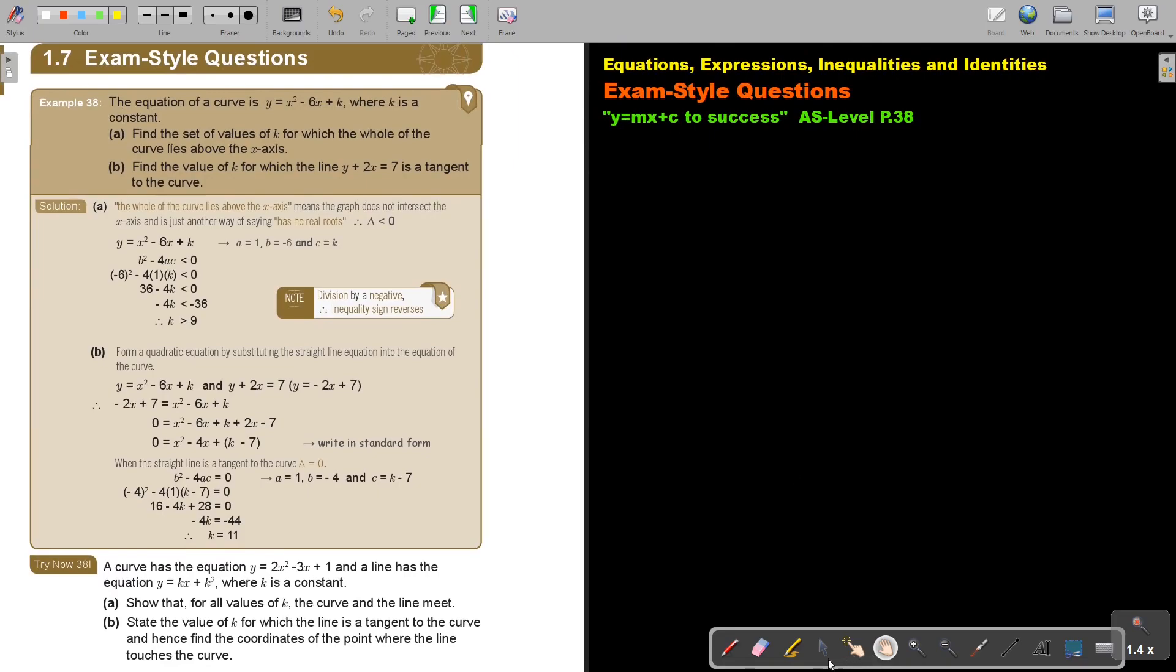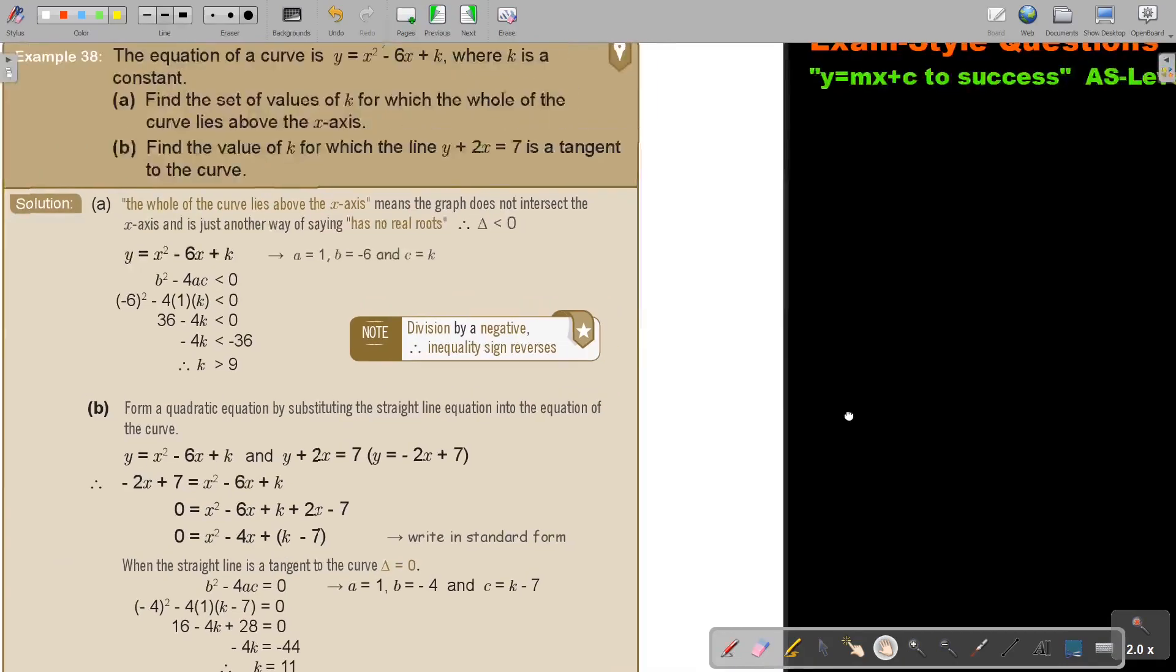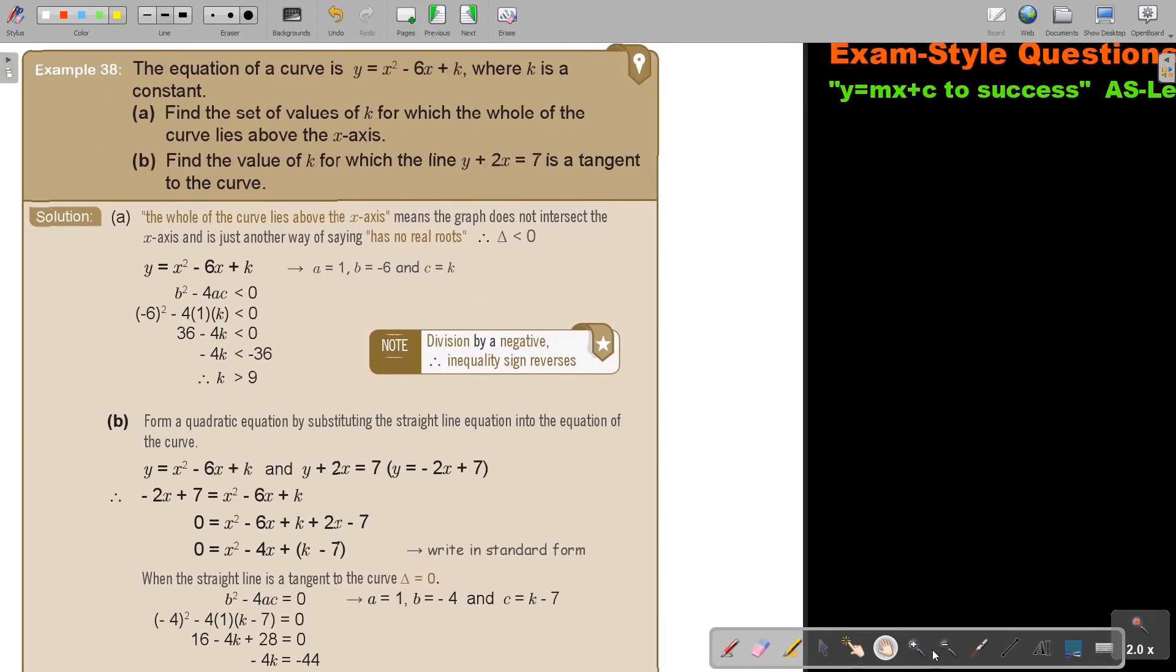Let's look at an example. I'm just going to make it bigger. The equation of a curve is y = x² - 2x + K where K is a constant. Find the set of values of K for which the whole of the curve lies above the x-axis. The whole of the curve lies above the x-axis means the graph does not intersect the x-axis and is just another way of saying it has no real roots. So the discriminant will be smaller than 0.